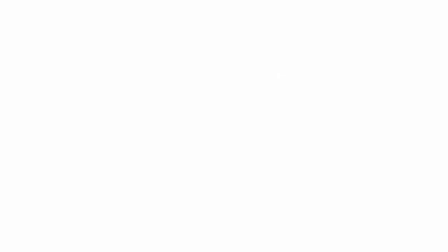So just a reminder that we're looking at an illustration of the energy density of a typical gluon field. When we do the lattice calculations, we average over hundreds to thousands of these configurations.